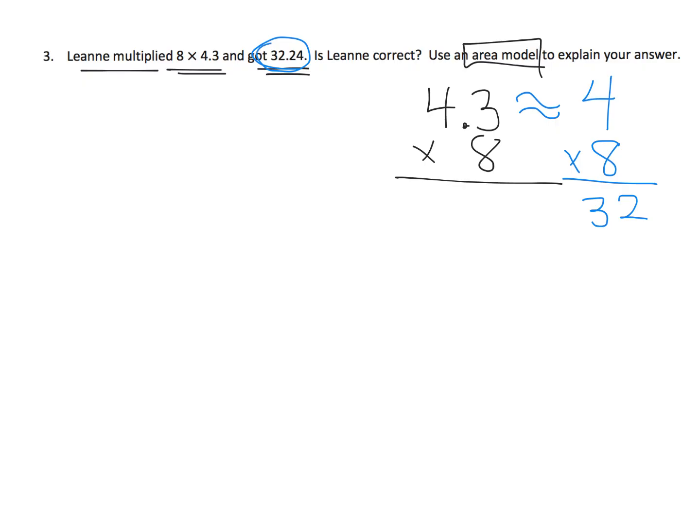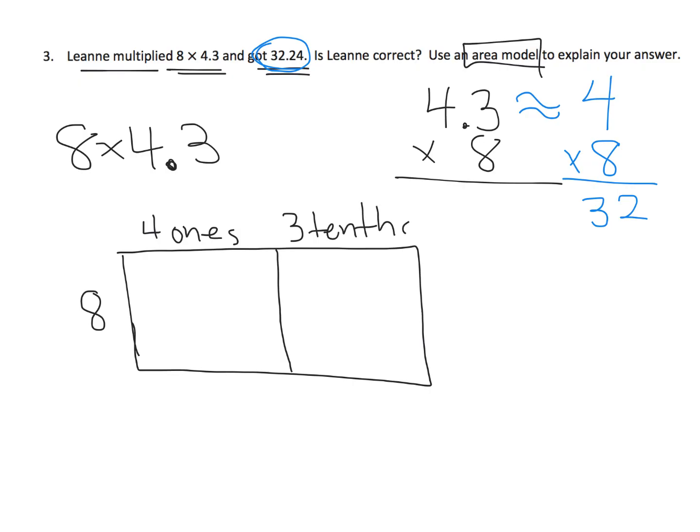But let's use that area model. And remember, 8 times 4.3 can be thought of as finding the area of a rectangle. And in this case, the height of that rectangle is 8. And the width of that rectangle, or the length of, or whatever, of that rectangle is 4 ones and 3 tenths. And then using multiplication, 8 times 4 ones, that gives us 32 ones. And then over here, 8 times 3 tenths, that gives us 24 tenths.